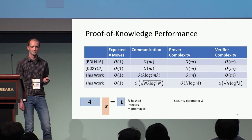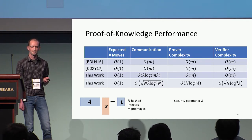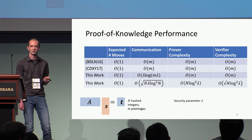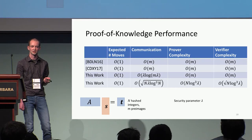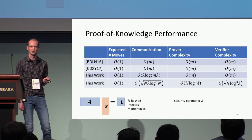Here's a quick comparison with previous works. For us, the communication cost of our proof of knowledge scales linearly in λ and logarithmically in m, the number of preimages. Particularly when you have a large number of preimages, this can be much better than previous proofs.